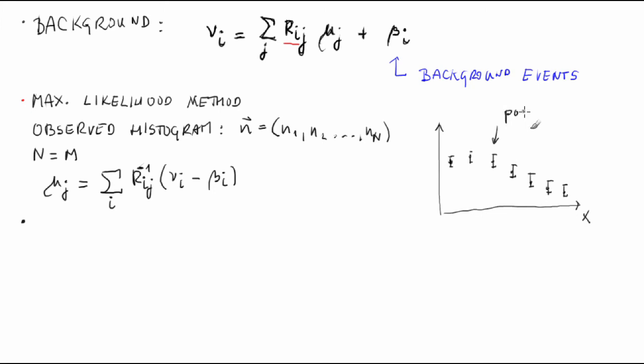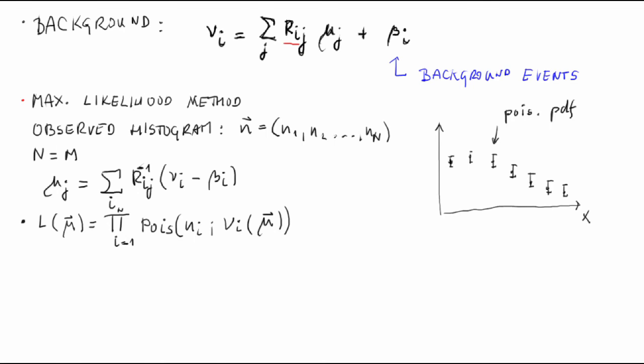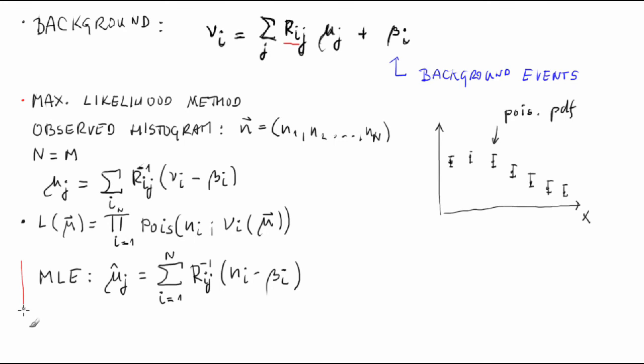Now let's assume the most common situation: that the pdf for the observed histogram is a product of Poisson pdfs. L(μ⃗) = ∏_{i=1}^{n} Poisson(n_i | ν_i(μ⃗)). Assumption of an n-dimensional Gaussian pdf would work the same, but the product of Poissons is the most common. In this case, the maximum likelihood estimators of μ_j are: μ̂_j = ∑_i R^{-1}_{ji} (n_i − β_i). Very simple answer from the maximum likelihood method: we just need to subtract background and invert the response matrix to get the desired estimators.